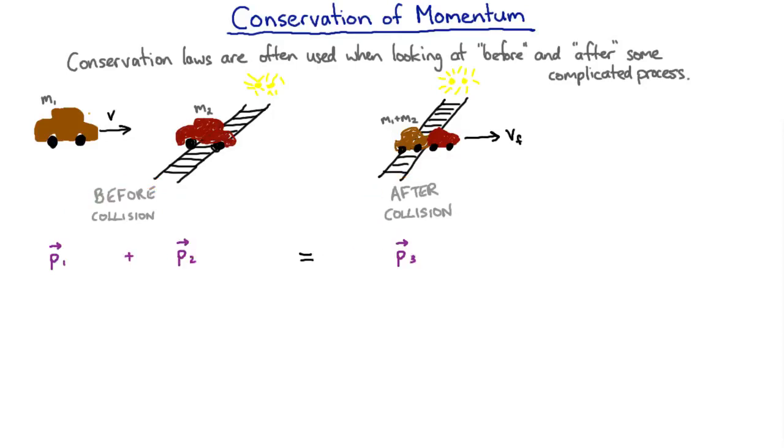So before the collision, we have one object and another object, so we need two momenta to add together. And afterwards, we have just one thing, so we've just got one momentum for that. Now non-relativistically, the momentum of an object is just its mass times its velocity. And the velocity of the second car is initially zero, so that's easy.